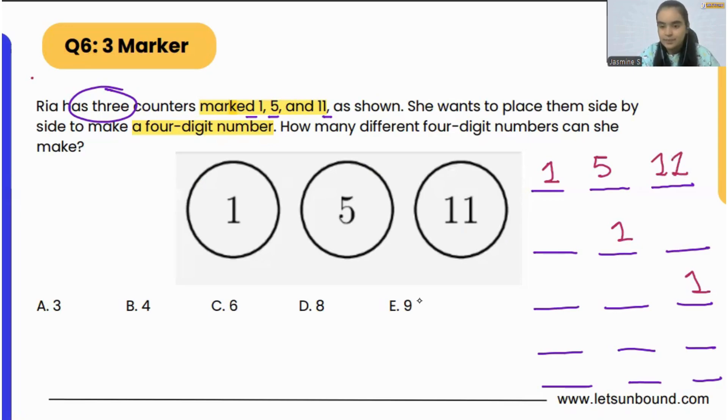Now what we can do is put 5 here and 1 and 1 over here, basically 11 in the end. This is our second number: five thousand one hundred and eleven. Now can we put 11 here instead?